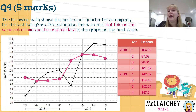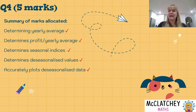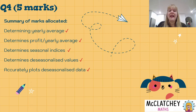You may be asked to comment on the difference between the two graphs. The key point is that de-seasonalising is about smoothing data so we can see the actual underlying trends. To summarise where all the marks came from: step one was the yearly average; step two was profit divided by yearly average; step three was calculating the seasonal indices; and step four was de-seasonalising the values and accurately plotting them. A lot of work for not a lot of marks.